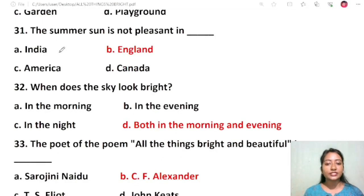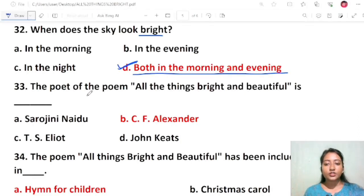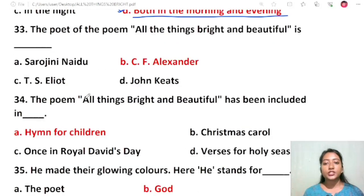Question 29: The summer sun is not pleasant in India. This answer was incorrect, kindly rectify it. The summer sun is not pleasant in India because it's a hot country. Question 30: When does the sky look bright? In the morning, in the evening, in the night, both in the morning and evening. The correct answer is both in the morning and evening. Question 31: The poet of All Things Bright and Beautiful is C.F. Alexander, or Cecil Francis Alexander.